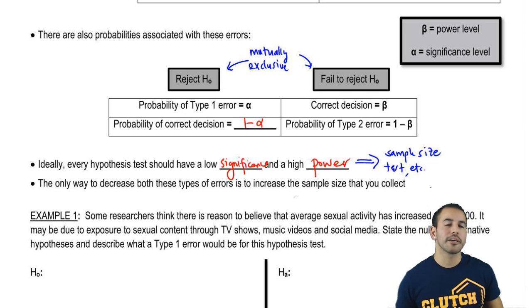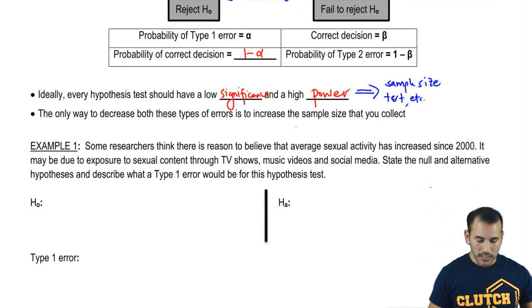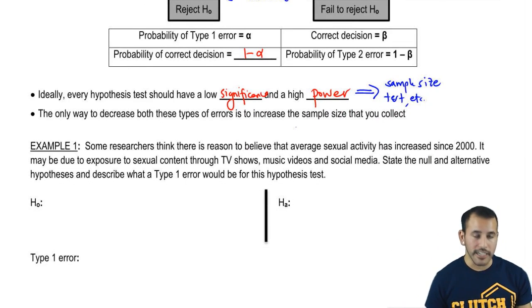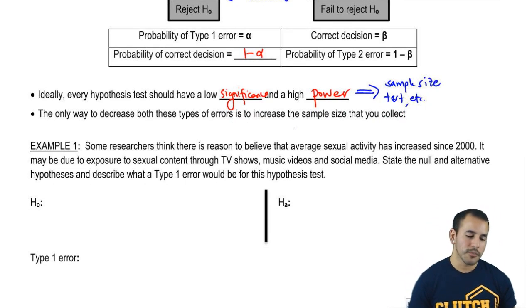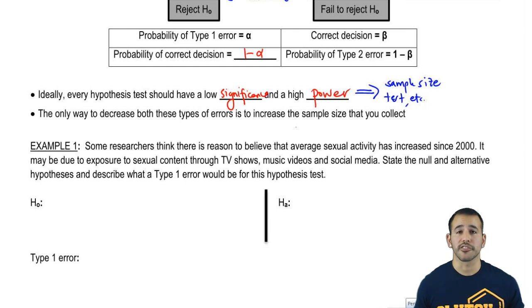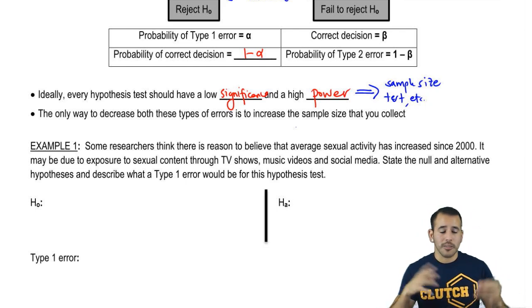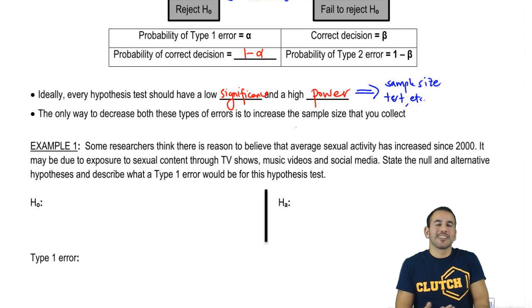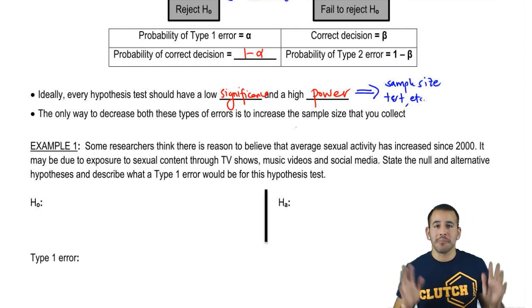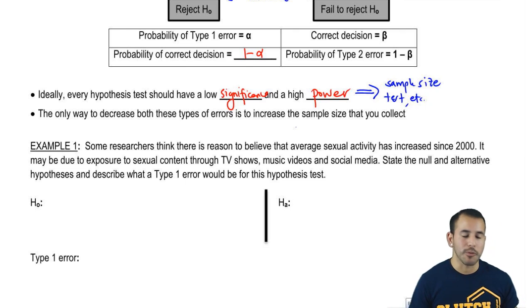In general, a bigger sample size is always better. Now let's do a quick thought experiment — still no numbers. Some researchers think there's reason to believe that sexual activity has increased since 2000, maybe because of more sexual content on TV shows and media. People are a little desensitized to sex and more open to it. State the null and alternate hypotheses and describe what a Type 1 error would be.